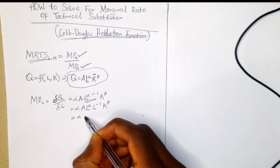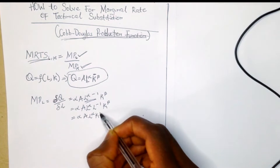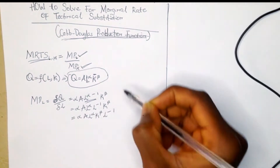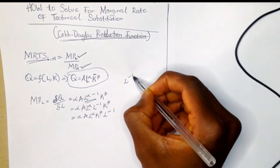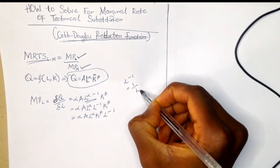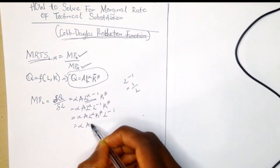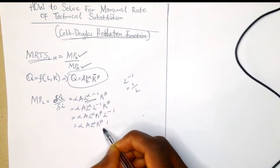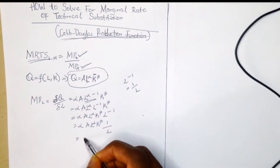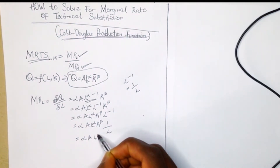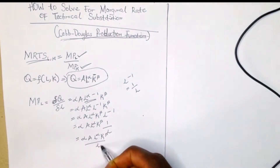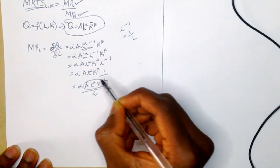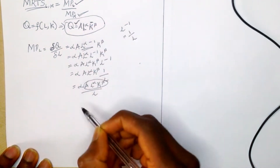This equals alpha times A times L^alpha times K^beta times L^(-1). From our law of indices, L^(-1) equals one over L, so we have alpha times A times L^alpha times K^beta times (1/L). This simplifies to alpha times A times L^alpha times K^beta over L.